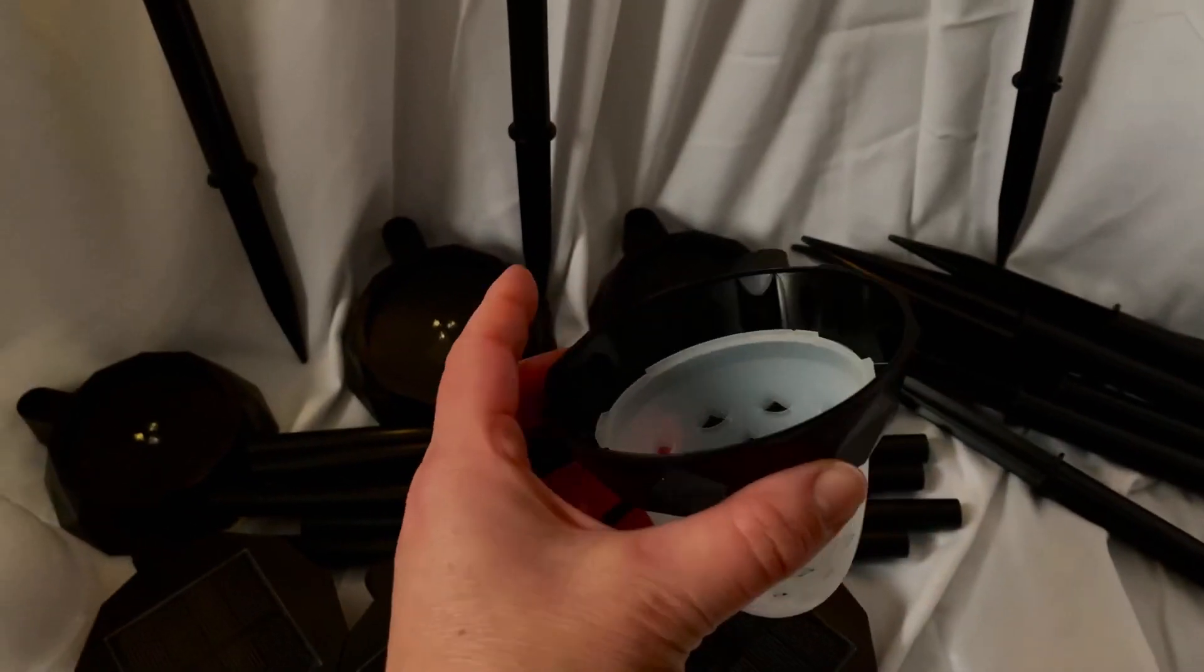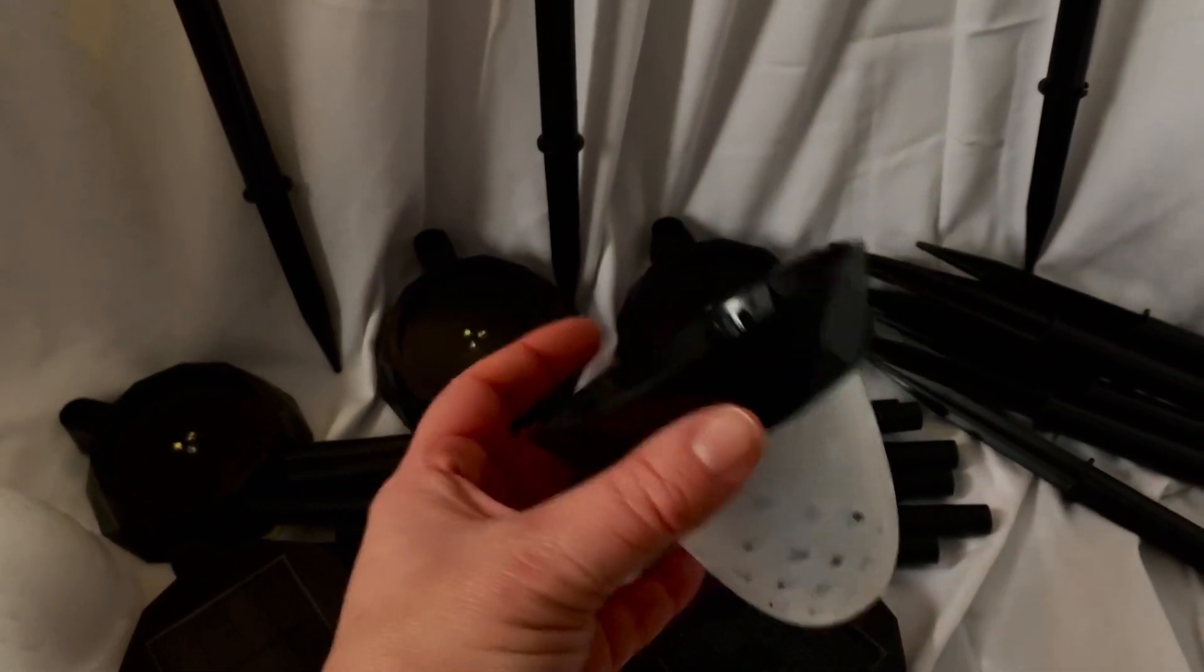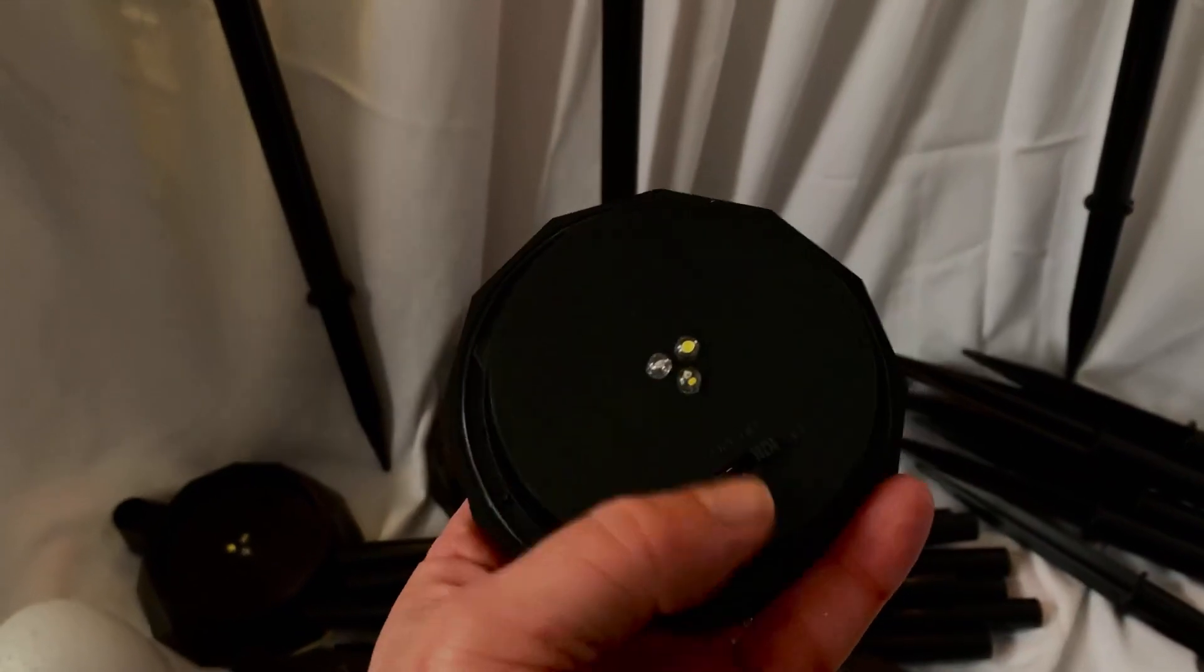Now when you assemble them, you simply pull the solar panel off, put the globe in, and then you have the solar panel here.